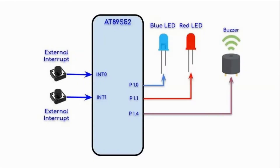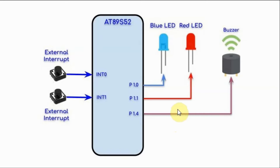A block diagram demonstrating external interrupts is shown. Two push buttons are connected to the interrupt 0 and interrupt 1 pins, two LEDs and a buzzer are connected to pins of port 1. When there is no external interrupt, the two LEDs alternate turning on and off. When the first button is pressed, interrupt 0 is generated, triggering the buzzer, and the blue LED blinks 15 times very fast.